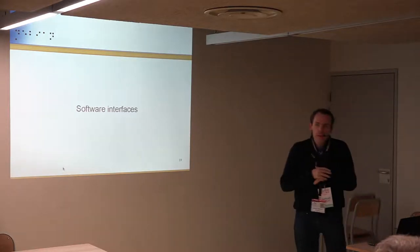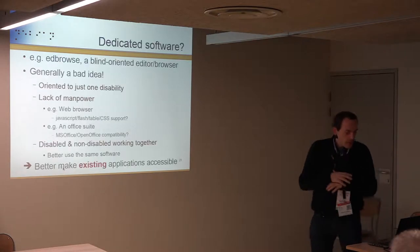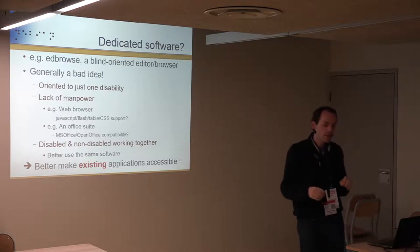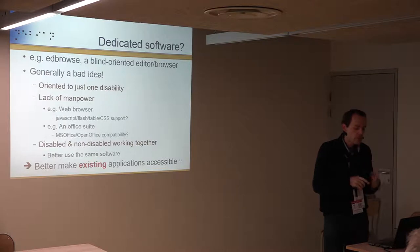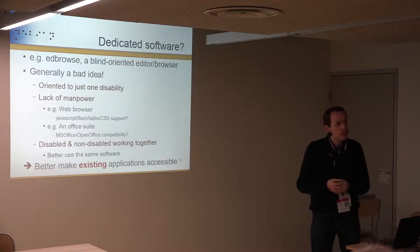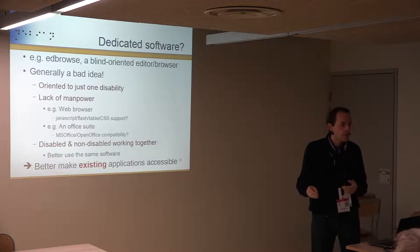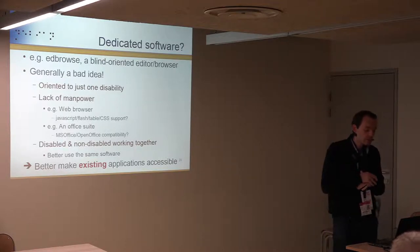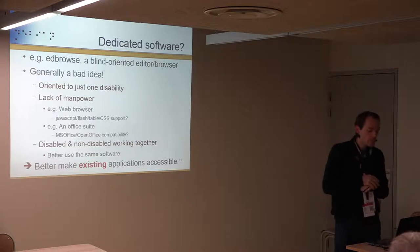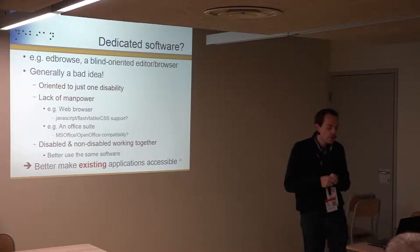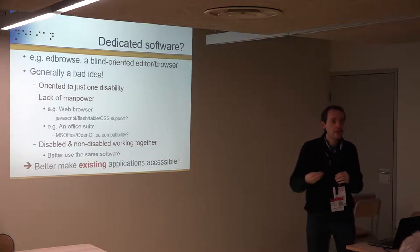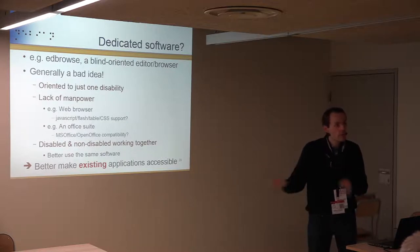For software, one important thing to understand is that writing dedicated accessibility software is usually a bad idea. For instance, EDBrowse was meant to be a browser for blind people, but it doesn't support JavaScript or CSS, and there's not enough manpower to implement everything. Instead, just make existing applications accessible — making Firefox accessible is a lot of work, but it's less work than rewriting the entire JavaScript engine.